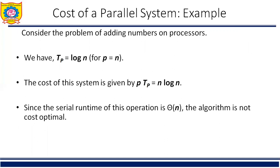Consider the example of adding n numbers on n processors. The algorithm for adding n numbers on n processing elements has a processor-time product of O(n·log n). Since the serial run time of this operation is O(n), the algorithm is not cost optimal. The total parallel time for this operation is log n, p = n, so the cost of the system is P×TP = n·log n. Since the serial run time is O(n), the algorithm is not cost optimal. This is a good example of a non-cost-optimal algorithm.